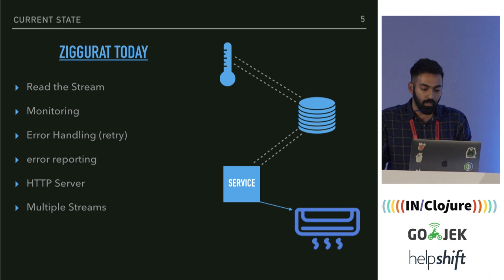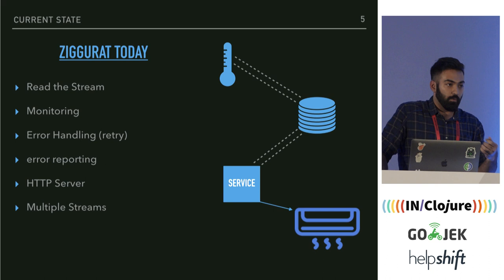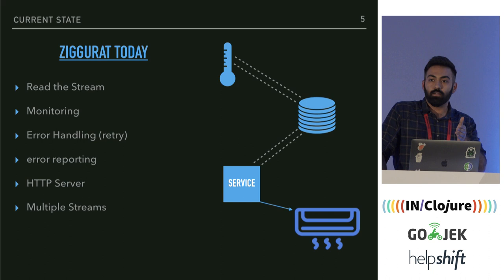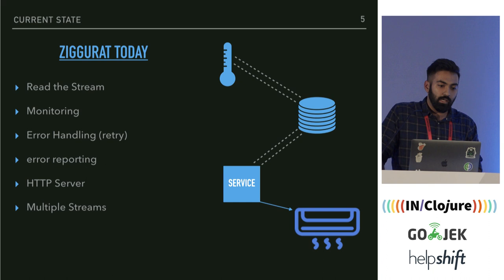You have a stream of data that varies over time. You store it in a database, then you set up a service that starts reading that data. That service needs to manage its offset — it should track how far it has read and from where to keep reading. The service reads data, and you write basic logic: if the temperature goes above 41 degrees Celsius, turn on the AC; if it goes below something, turn off the AC.